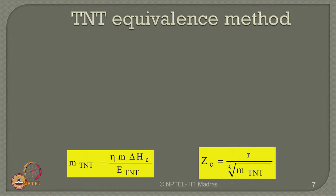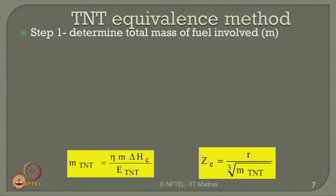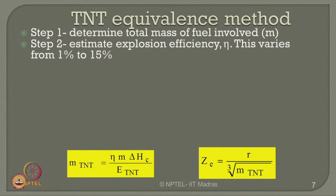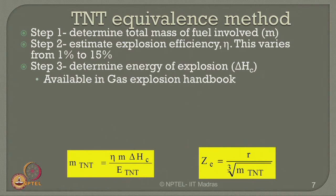We are interested in the mass equivalence of TNT, which can be converted to an equivalent damage caused by the explosion. Step 1: determine the total mass M of fuel involved. Step 2: estimate the explosion efficiency eta, which generally varies from 1 percent to 15 percent in the literature. Step 3: determine the energy of explosion, delta H_c, which is available for every explosive chemical in the gas explosion handbook.